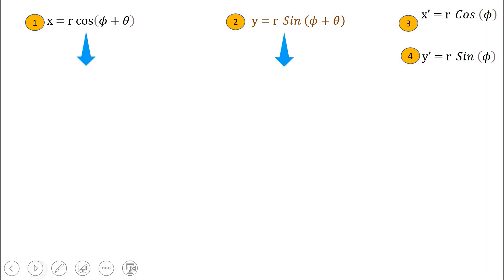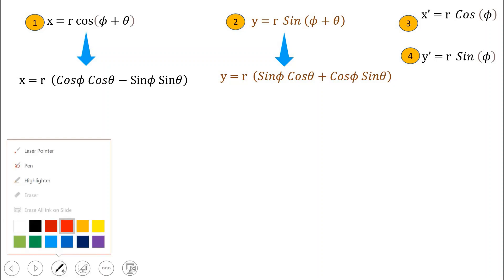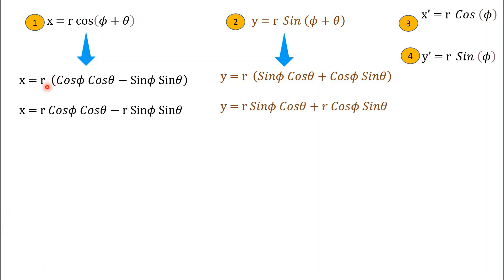Now expanding equations 1 and 2 using the identity cos(A+B) = cosA·cosB − sinA·sinB: x = R·cos(phi)·cos(theta) − R·sin(phi)·sin(theta). And sin(A+B) = sinA·cosB + cosA·sinB gives: y = R·sin(phi)·cos(theta) + R·cos(phi)·sin(theta).